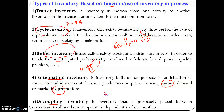The next type is decoupling inventory. As discussed, between machine A and machine B, if you maintain an inventory, that is your decoupling inventory — also known as work-in-process inventory. The reason for maintaining it is so that machine B is not dependent on machine A. If machine A fails, production at machine B should not stop. You need sufficient excess quantity such that while machine A is being repaired — say for one hour — machine B can continue running using the work-in-process inventory.